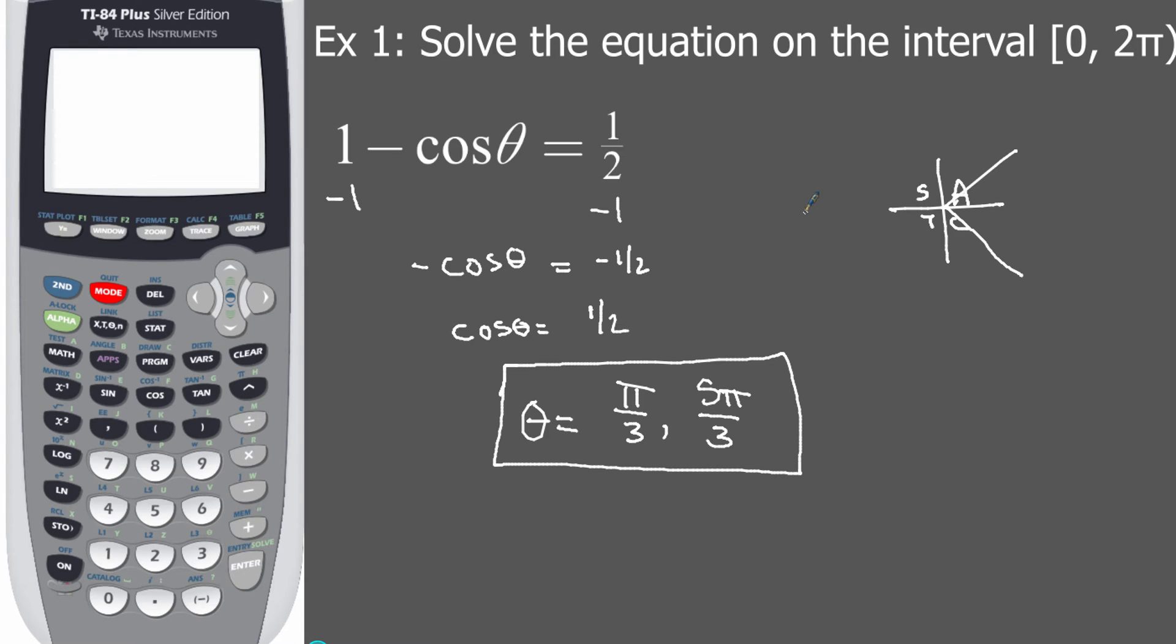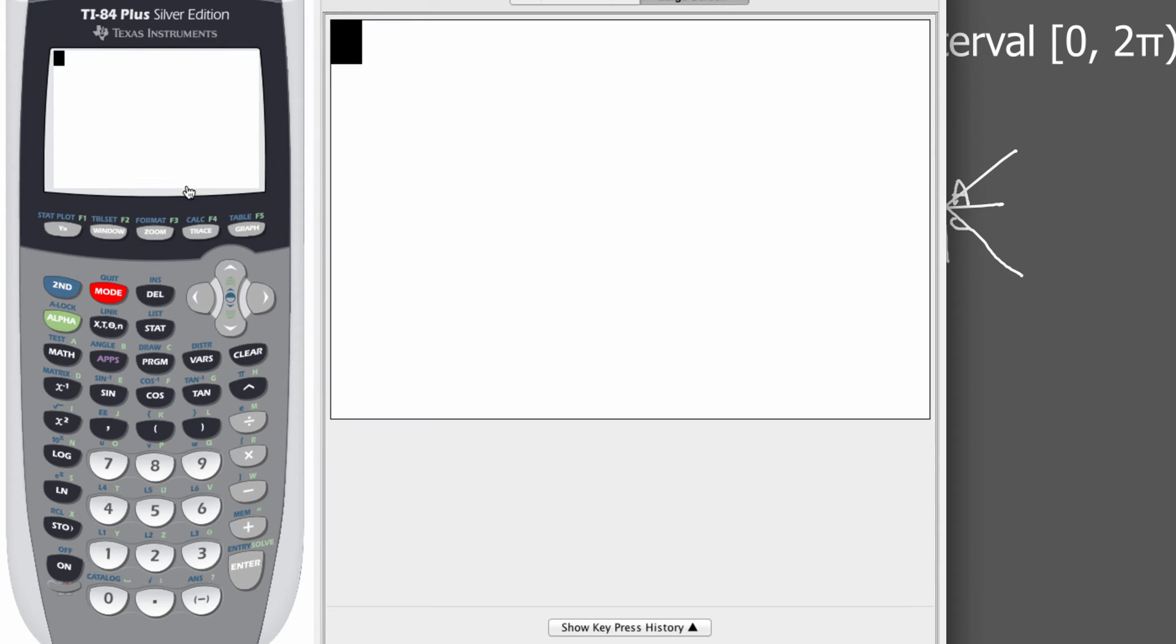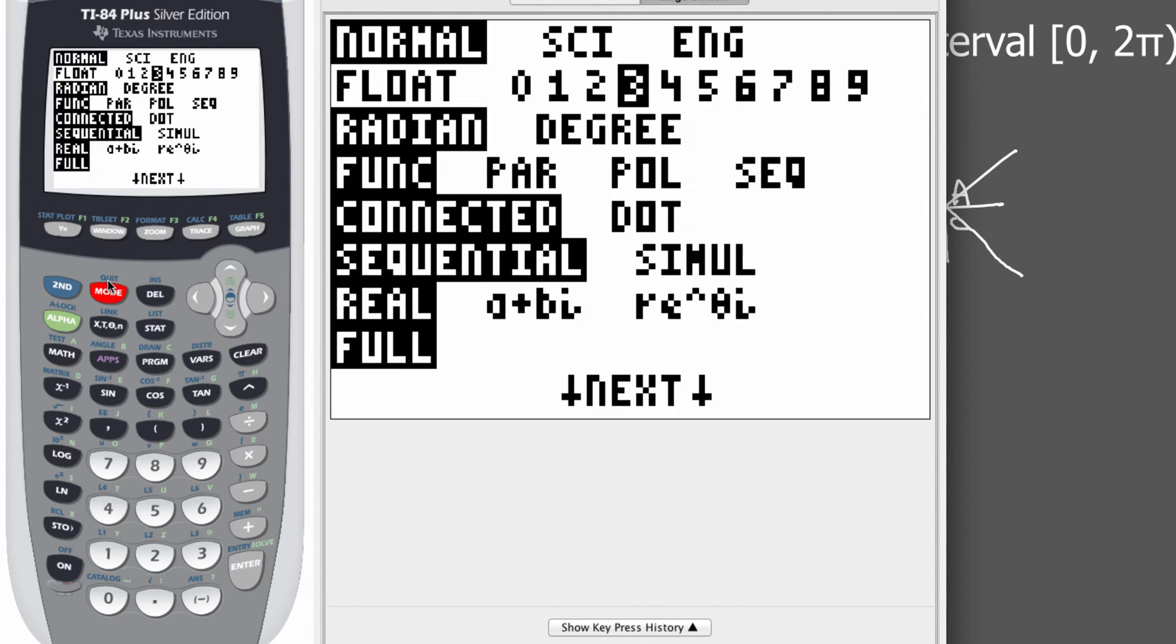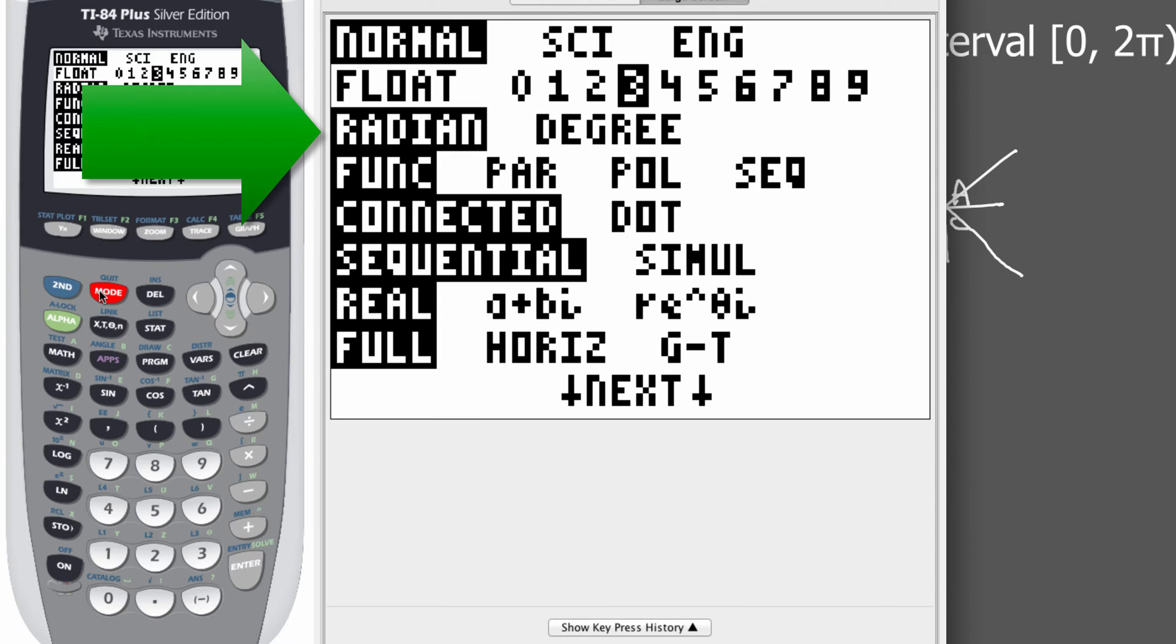But we're going to test these out, we're going to verify those solutions graphically from our TI-84 graphing calculator. Now let's verify this. What I want you to do first is hit your MODE button because we want to make sure we're in radian mode.